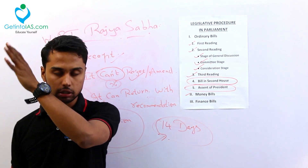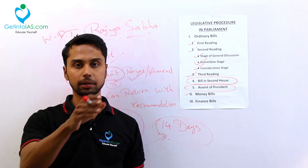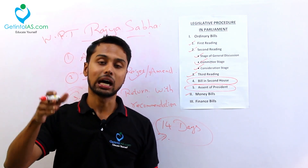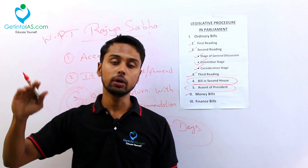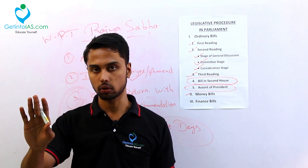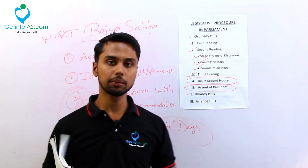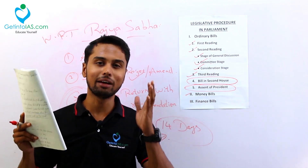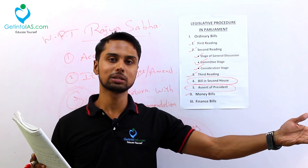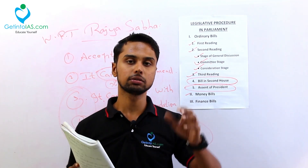If a money bill is passed in Lok Sabha, it will go to Rajya Sabha. Rajya Sabha can accept it. If Rajya Sabha returns the bill with recommendations, it is up to Lok Sabha to either accept or reject those recommendations. Whatever may be, that 14 days applies. Rajya Sabha is not at all having significant function in terms of money bills - only in this 14 days can they do anything, and even that is subject to Lok Sabha accepting the amendments or not.